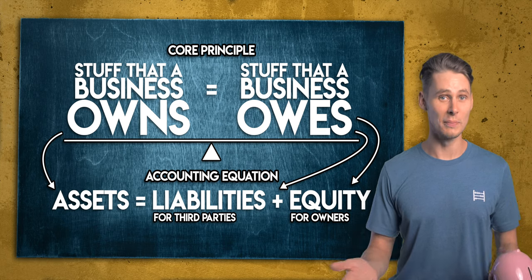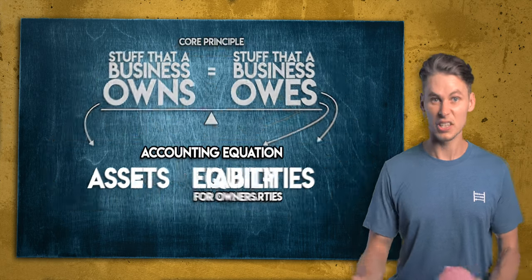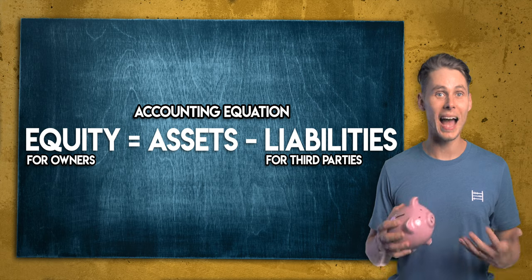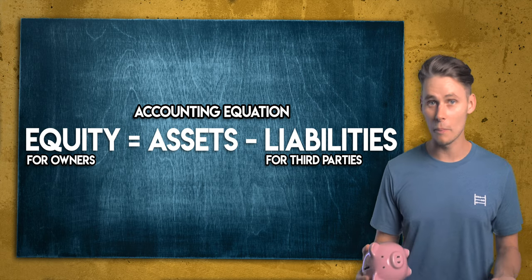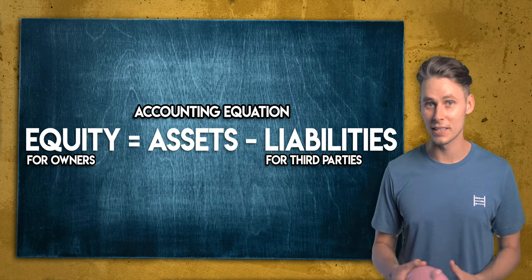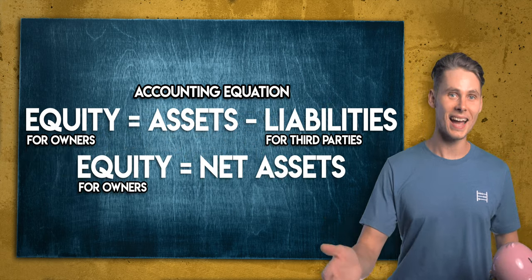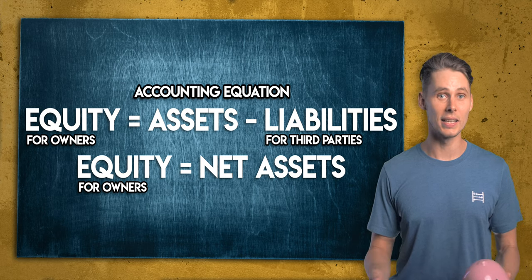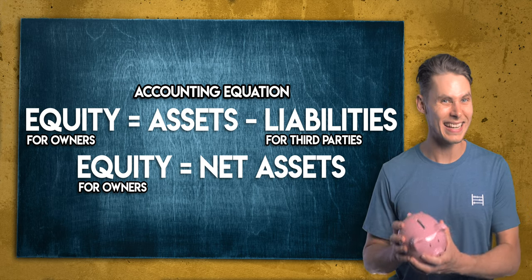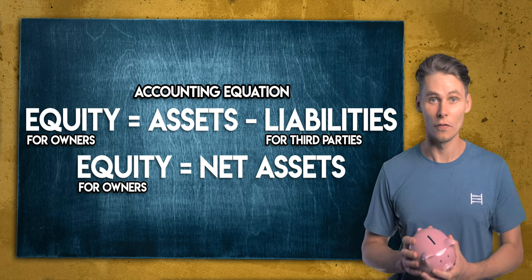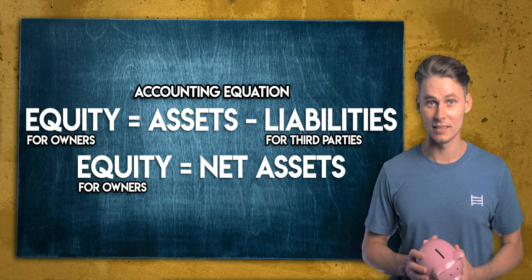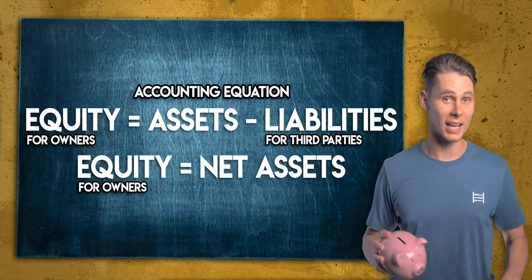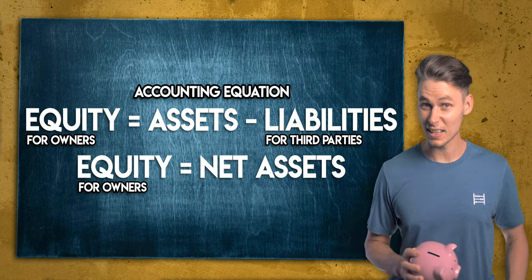We can see this more clearly by rearranging the accounting equation. Equity is equal to assets minus liabilities, which we call net assets. So equity is the owner's claim on the net assets of the business — it's what remains after all debts and obligations have been settled.